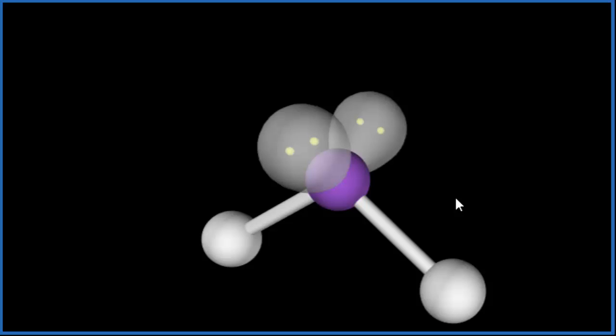For the electron geometry, we take into account the lone pairs, so the electron geometry is tetrahedral. Let's go back to our Lewis structure.